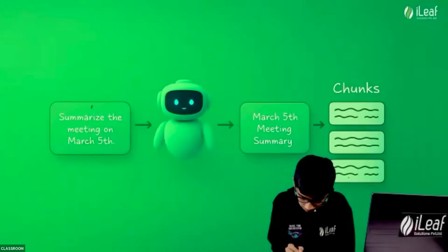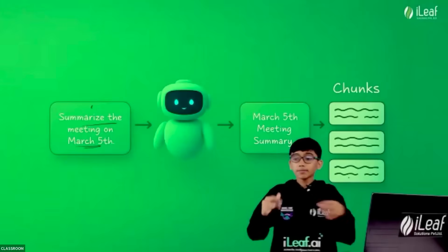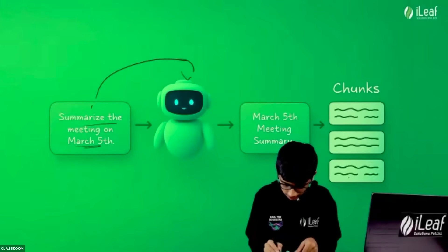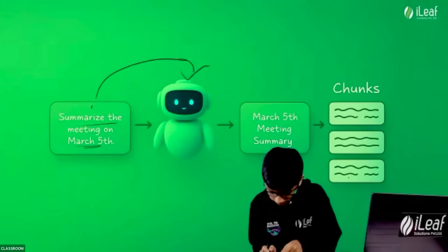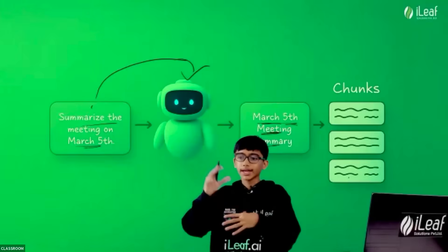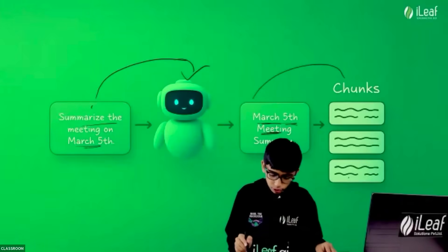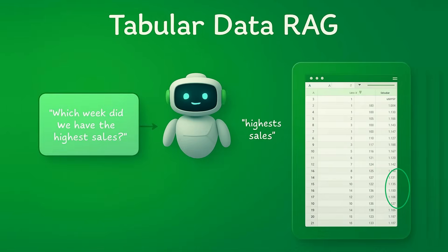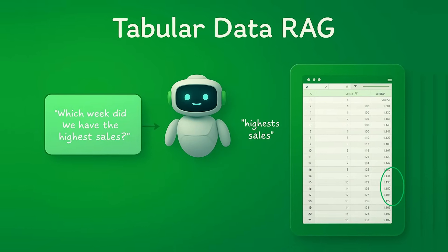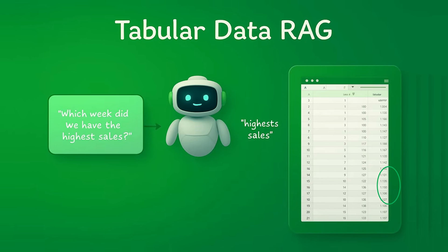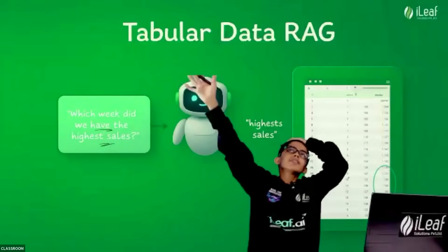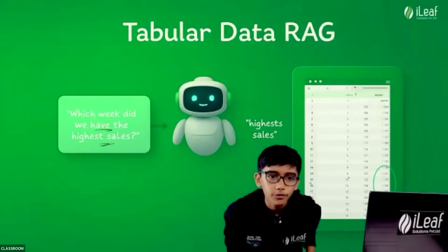So let's say someone says: what is this model? It can go and find a March 5th meeting summary. It goes online, summarizes it, and then it goes to the chunks. So it doesn't look through the full information — that's what I'm trying to say. It processes things differently — it doesn't go through the full information at once.